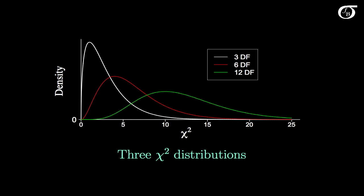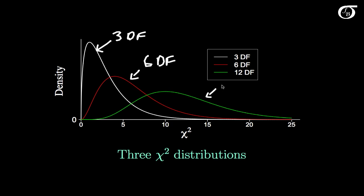A brief refresher on the chi-square distribution. Recall that the chi-square distribution's shape, mean, and variance depend on the degrees of freedom. To illustrate, I've plotted it for three different degrees of freedom: 3, 6, and 12. This is what the chi-square distribution looks like for these values. We need to choose the appropriate degrees of freedom in any inference procedure.